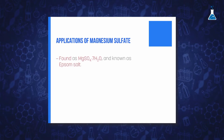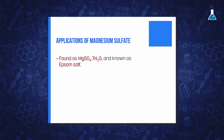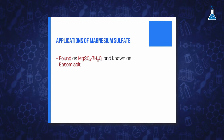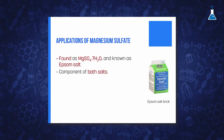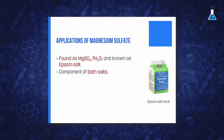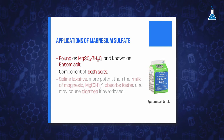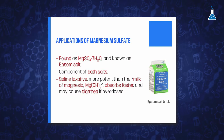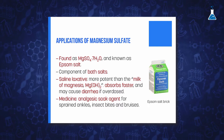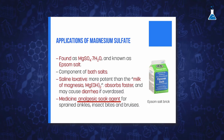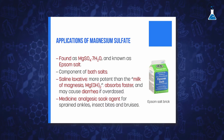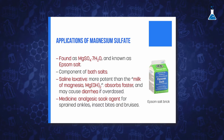The other important sulfate discussed in this section is magnesium sulfate, which is usually found as the heptahydrate form known as Epsom salt. This hydrated compound has been traditionally used as a component of bath salt and as a saline laxative. For use as a laxative, Epsom salt is more potent than milk of magnesia, a solution of magnesium hydroxide, because it absorbs faster and may cause severe diarrhea if overdosed. Other uses in medicine include as an analgesic soak agent for sprained ankles, insect bites, and bruises.